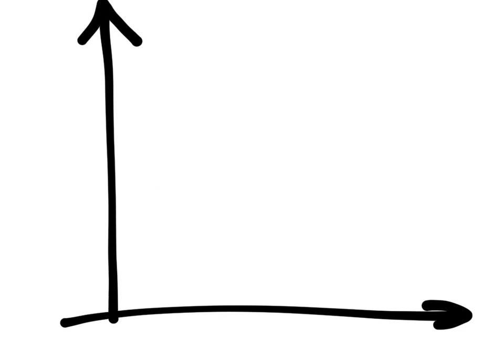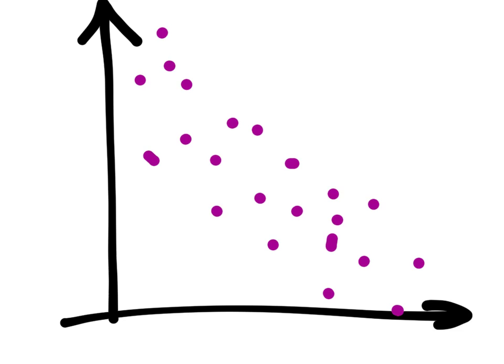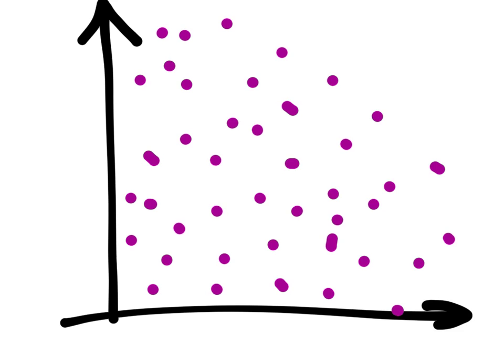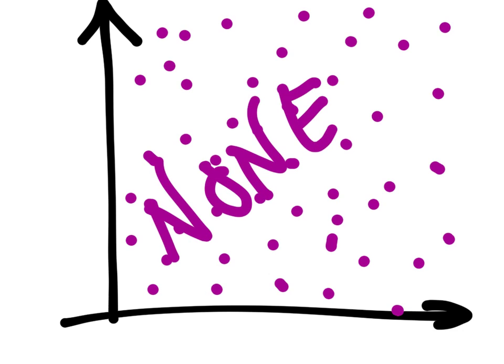We're going to have a graph like this with some points like this. What's the relationship in this graph between x and y? No association — bam. You don't have to write 'no association' because there's a lot of writing — just put 'none.' That means the relationship of x is not related to y.